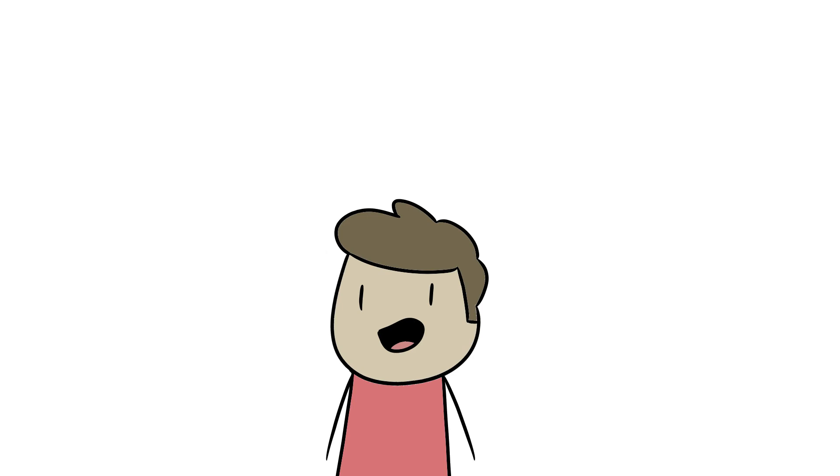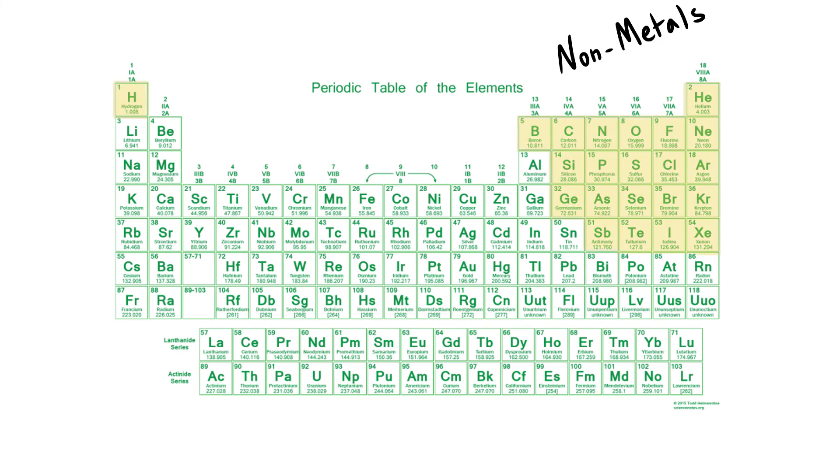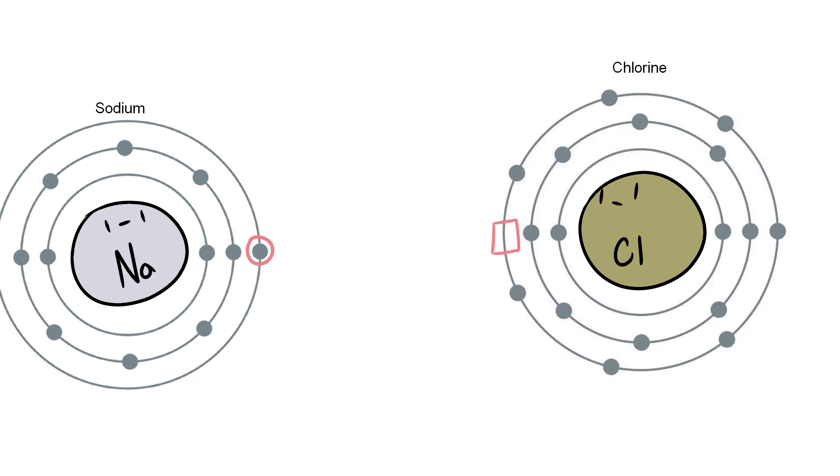Let's start with transferring electrons. When atoms do this, it's called an ionic bond. These only occur with a nonmetal and a metal. Let's look at sodium and chlorine. Sodium only has one valence electron while chlorine has seven. Since it's easier to give up one electron than seven, sodium decides to be a friend and give up his electron.